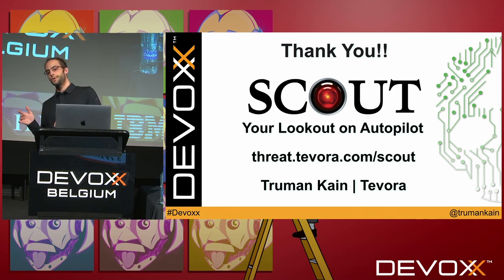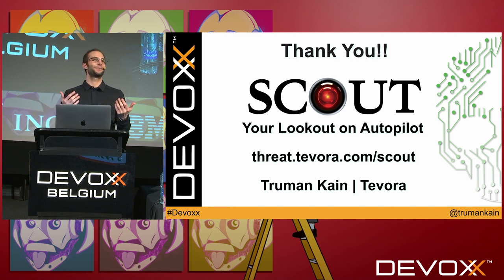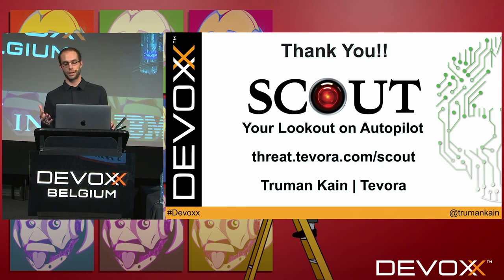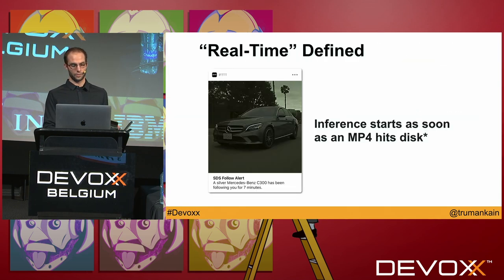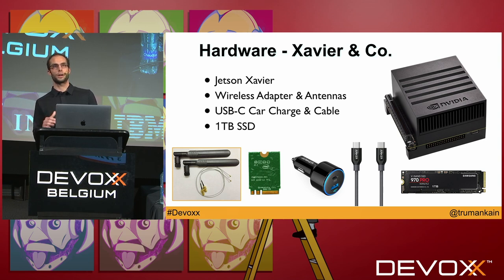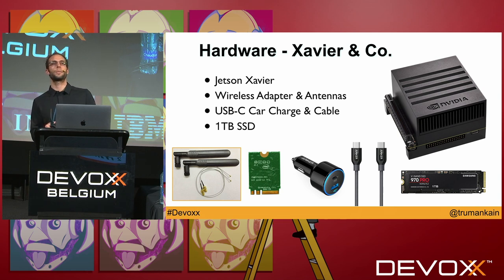Question: How are we powering the hardware — via battery or the car? The two pieces you need to power through the car are the USB-C cable and the car charger — you might need an adapter. You can power through a battery, but you won't be able to run the hardware at full speed. You need 30 watts to run it at a decent point to get detections done relatively quickly, which is why I recommend going through the car rather than a battery.